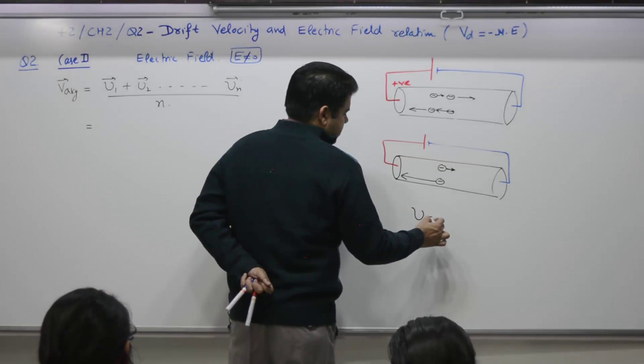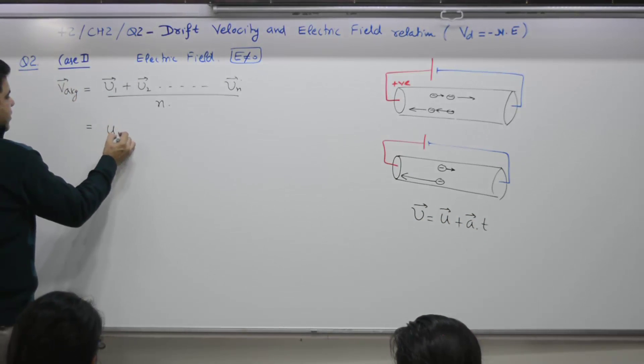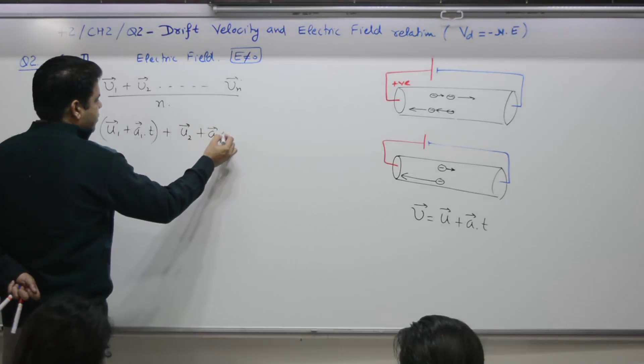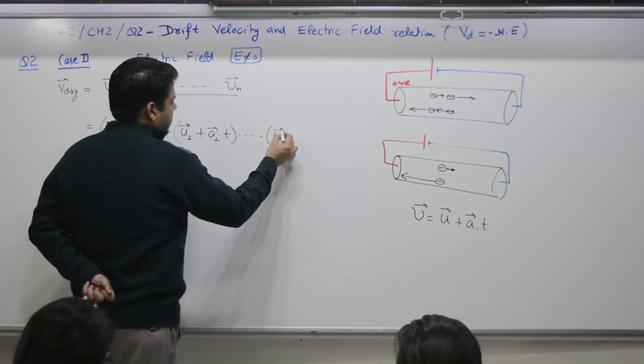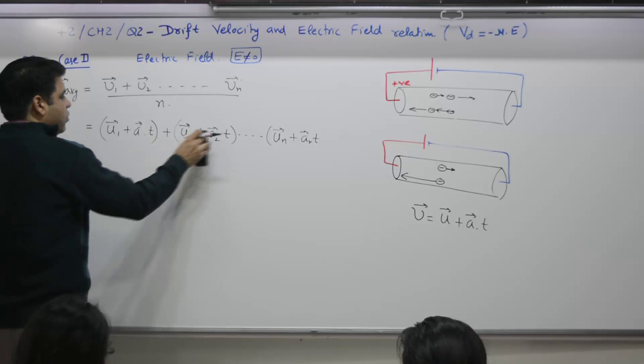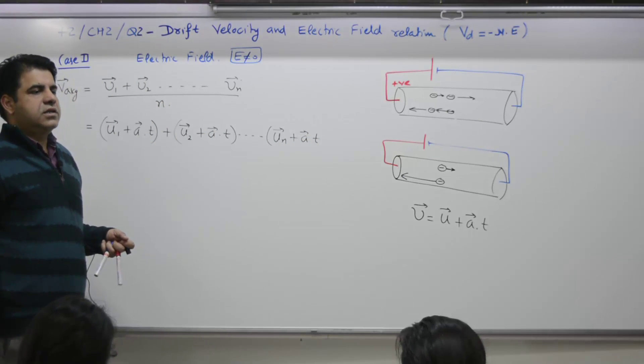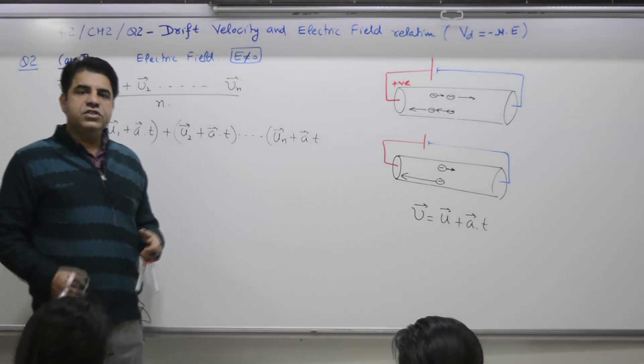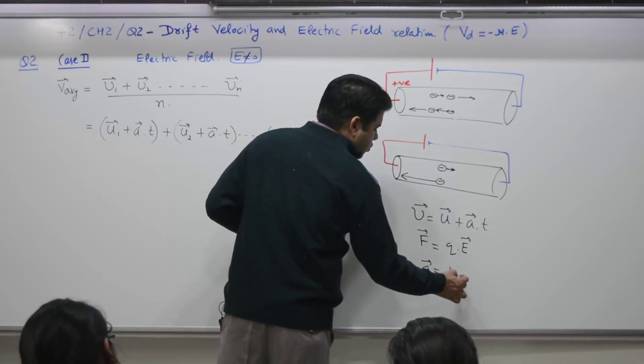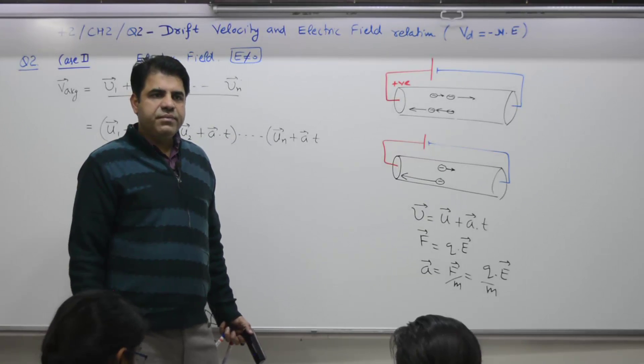So particle number 1, u1 plus a1 t. Particle number 2, u2 plus a2 t. And for nth particle, it is un plus an t. It is the same for all. Why? Because all charges are same, electric charge e or q. Electric field E is also same. F is equal to q into E. And acceleration is equal to force divided by mass, which is qE by m. Q for all electrons is same, mass for all electrons is same, E is also same. That is why it is not a1, it is a. Second is also a.